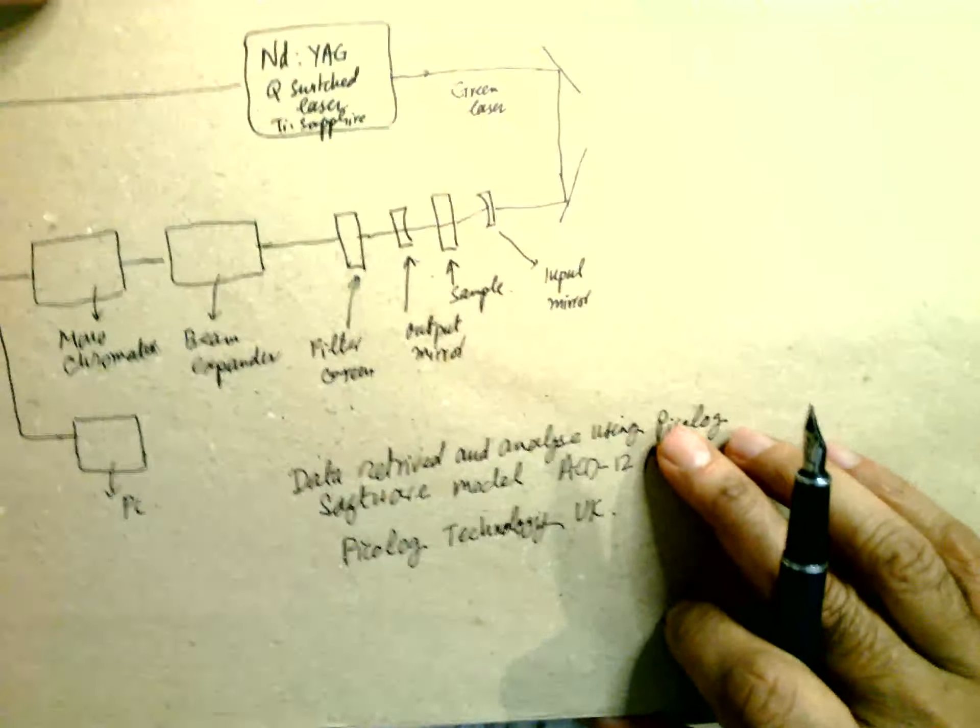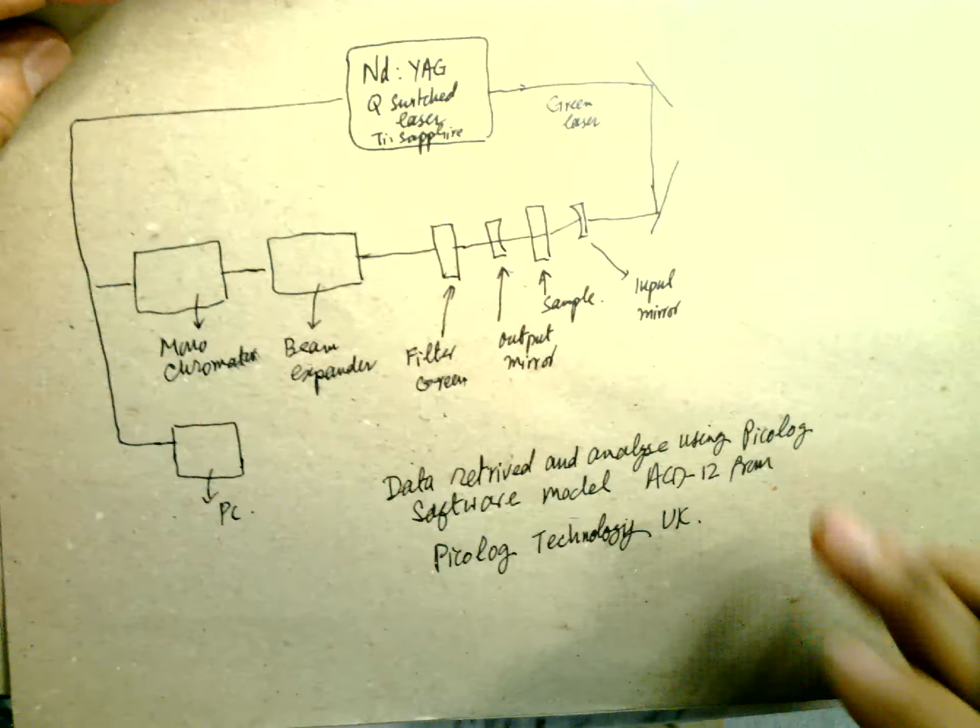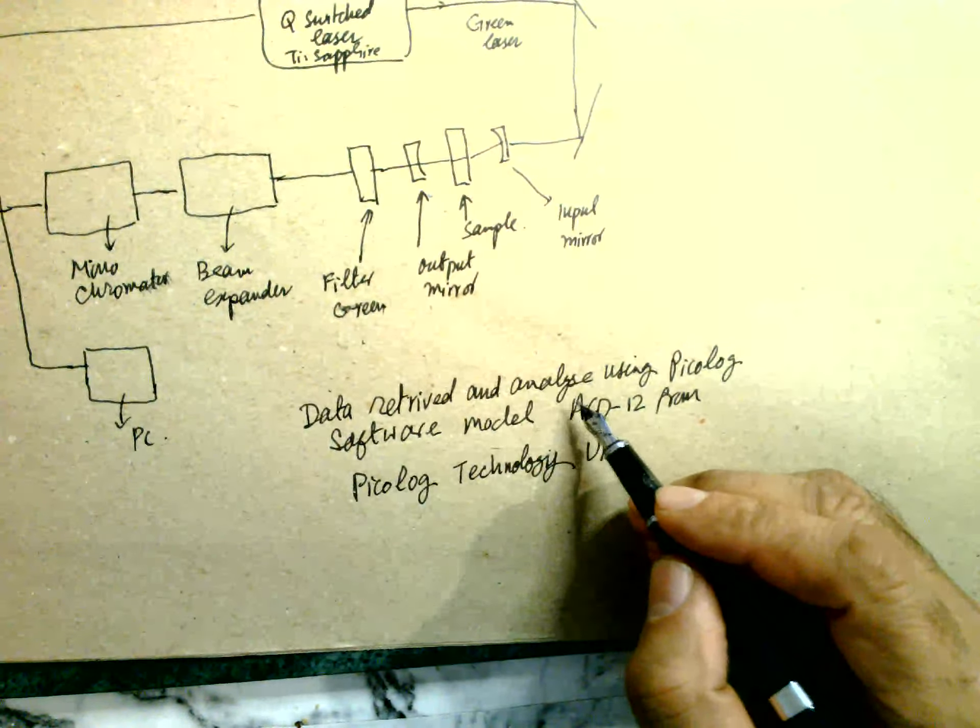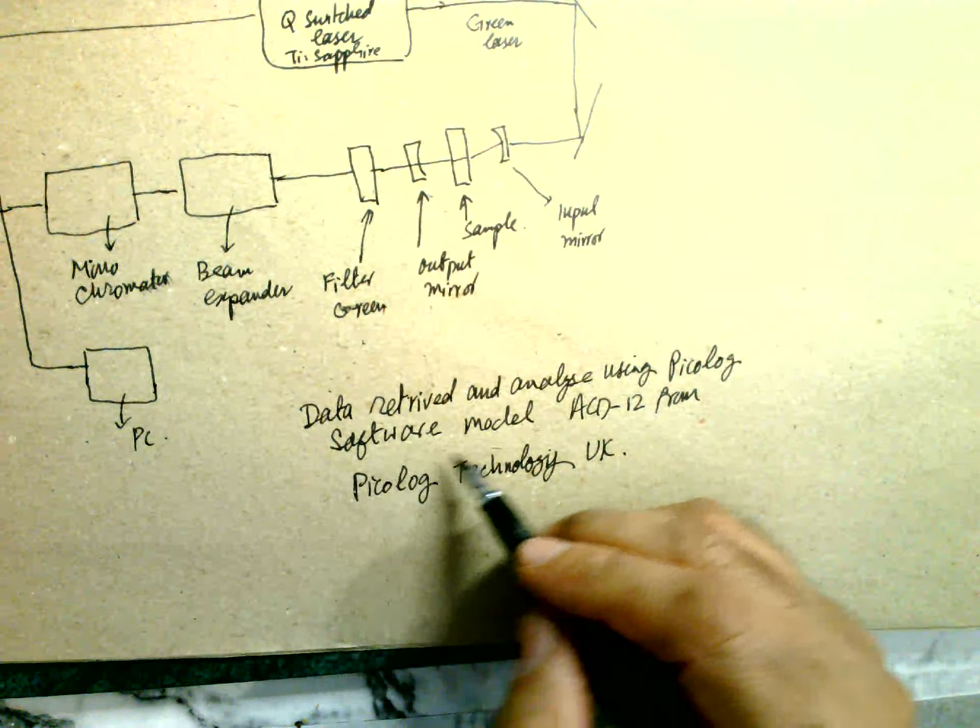Experimental setup: There's the Nd:YAG laser, a beam splitter, then a mirror here, and the concave mirror. This is the sample, the output mirror, input mirror. This is the cavity, then the filter for the pump. The pump is green, then the beam expander, and then the microcomputer linked to a PC. Data was reviewed and analyzed using Picolog software model ACD12 from Picolog Technology, UK Scotland.